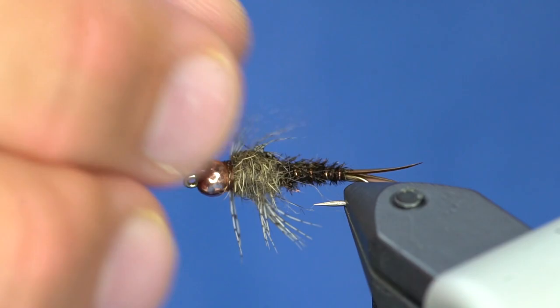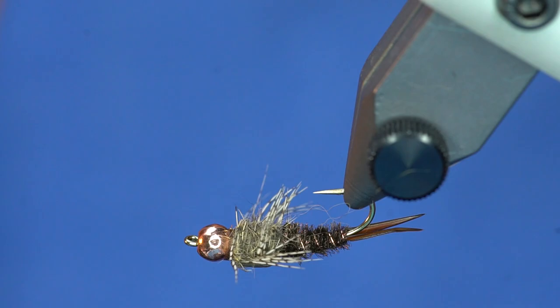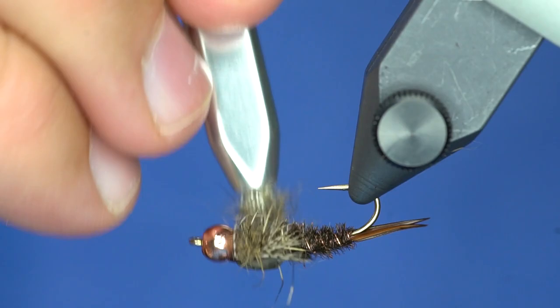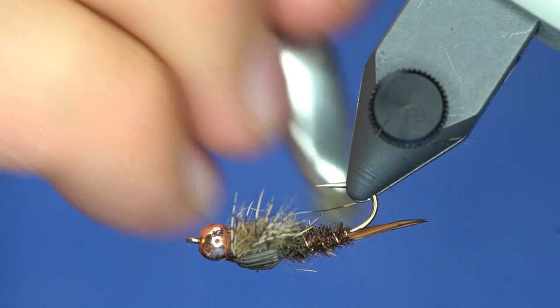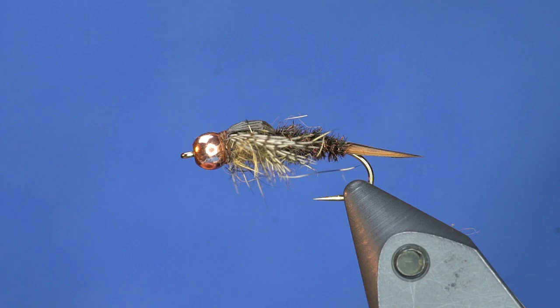I'm going to take this little TMCO dubbing brush. And this is really cool because you can just get in right where you want to pick the dubbing out. I'm going to turn it upside down and pull that squirrel to either side of the thorax. And that will kind of blend in with those partridge legs. So we've got a really picked out thorax now. And it blends in well with those legs.